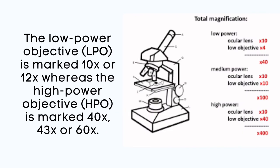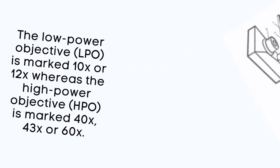The low power objective is marked 10x or 12x, whereas the high power objective is marked 40x, 43x or 60x.